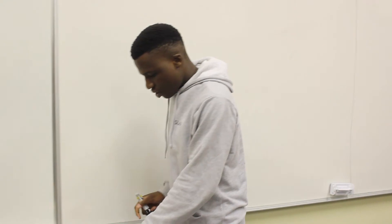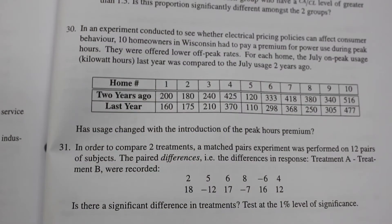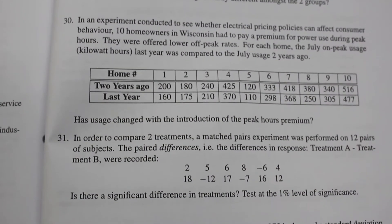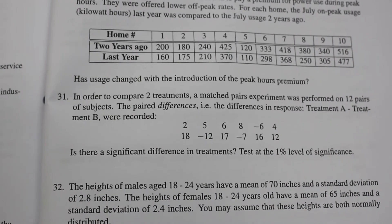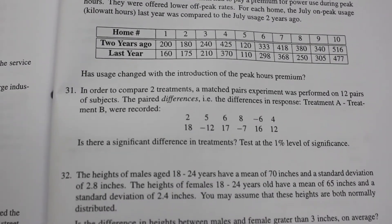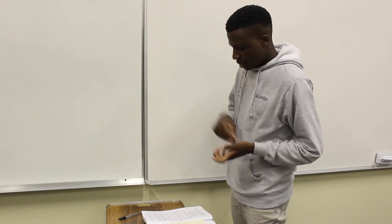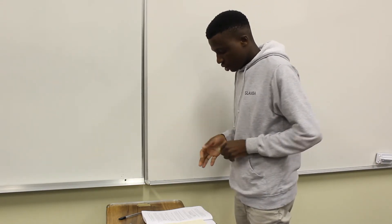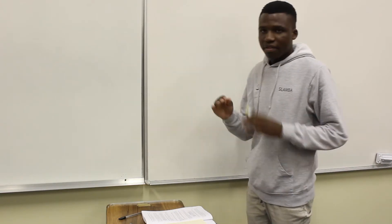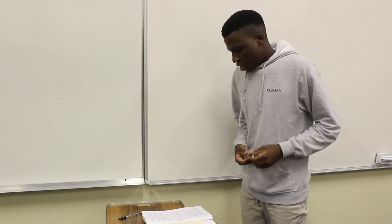Hi guys, my name is Slamba. Today we'll be doing question 31 on page 290. It reads as follows: in order to compare two treatments, a matched pairs experiment was performed on 12 pairs of subjects. The paired differences — that is, the difference in response, treatment A minus treatment B — were recorded.